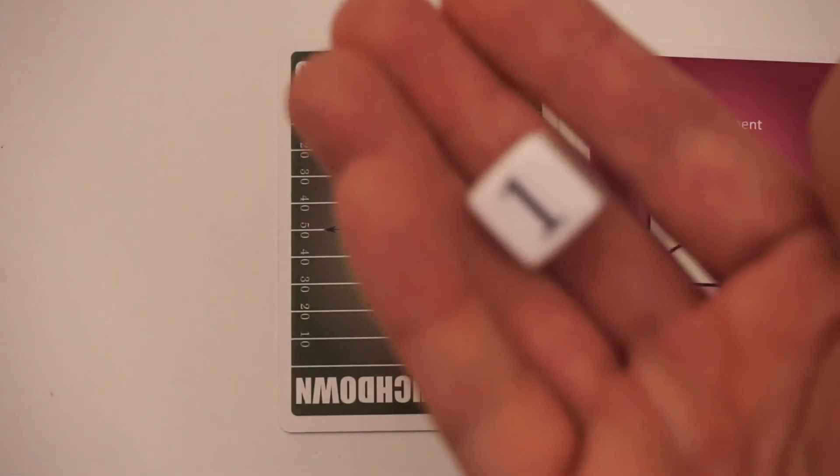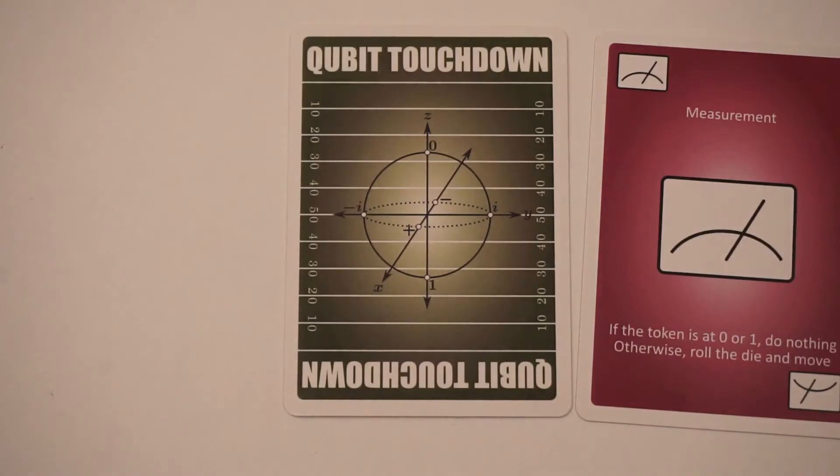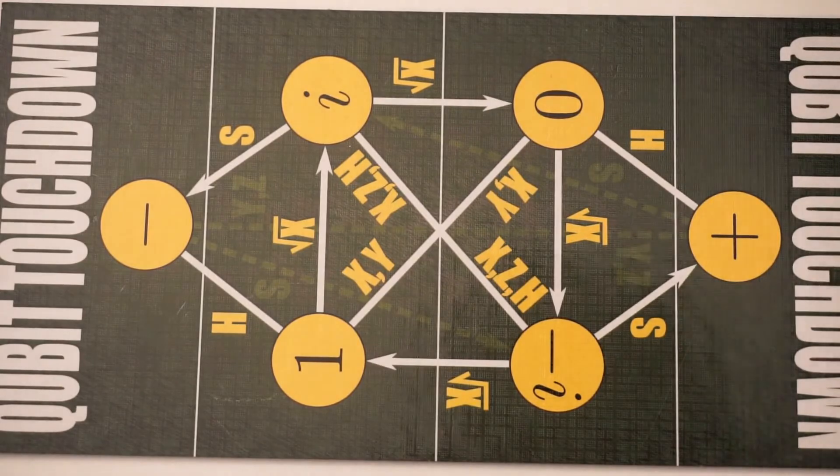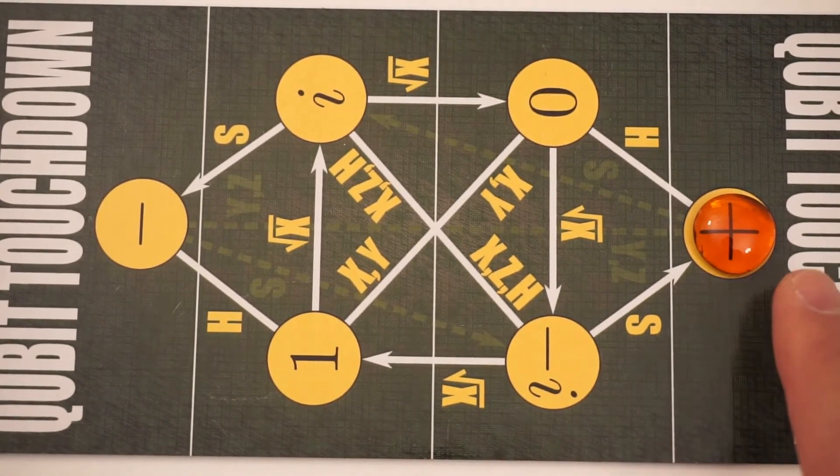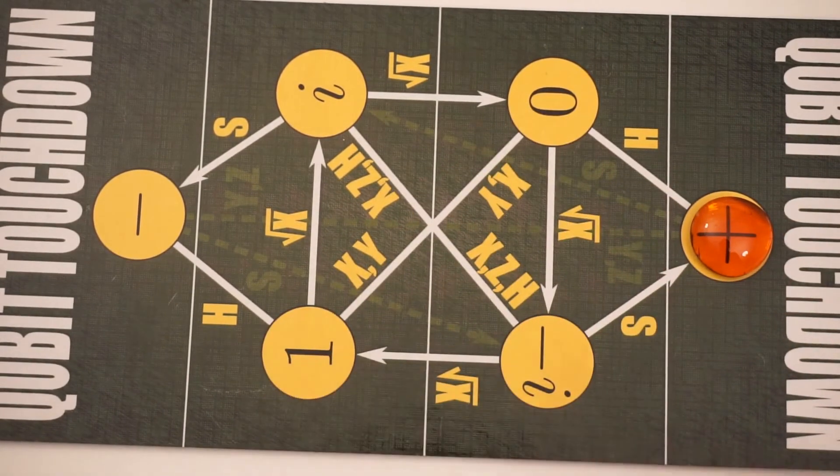And that's what this die corresponds to. So this die is actually a measurement. And you see that that's true everywhere here. So even after someone scores, and the football is now at the end zone, this is a plus state, which is on the equator. So if you were to measure this by rolling the die, you get a 50-50 chance of getting zero or one.